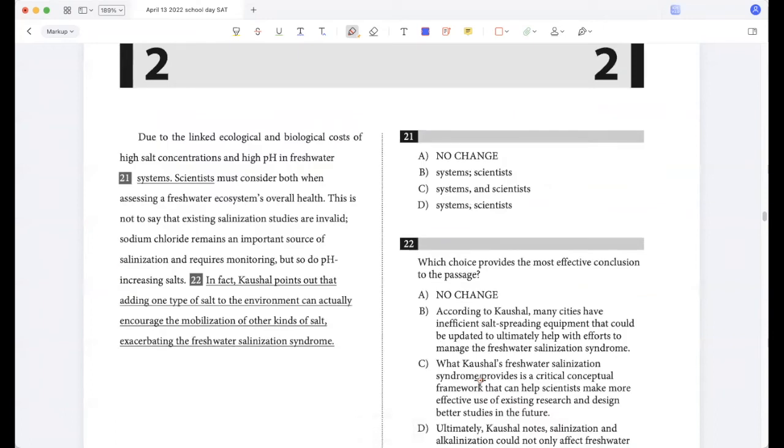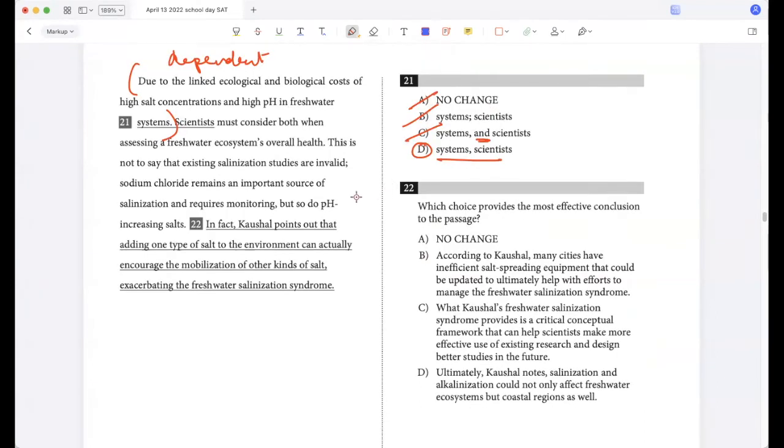Due to the linked ecological and biological costs of high salt concentrations and high pH in freshwater systems, scientists must consider both when assessing a freshwater ecosystem's overall health. So this 'due to' part is dependent, right? So I need a comma after this. So option D - a full stop or a semicolon would not make sense because they come between independent sentences. And here this 'and' is incorrect. This is not to say that existing salinization studies are invalid. Sodium chloride remains an important source of salinization and requires monitoring, but so do pH-increasing salts.